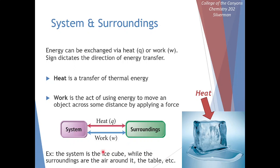Maybe there's no work being done on or by our system in this case, and that's fine. The two possible ways of exchanging energy are heat and work. We can describe the total energy of our system as U — capital U is the internal energy of our system. If we want to change the energy of our system, we can do that by supplying heat or doing work. The change in internal energy equals Q plus W: ΔU = Q + W.